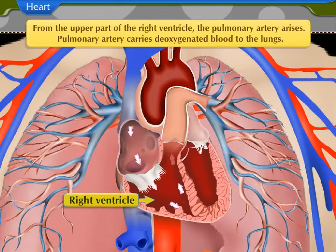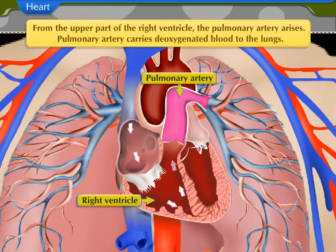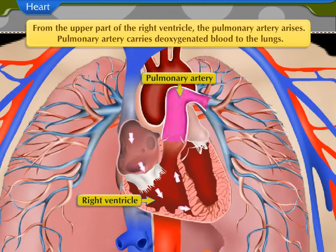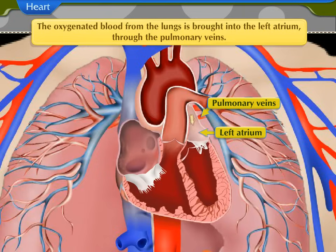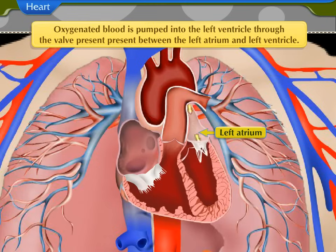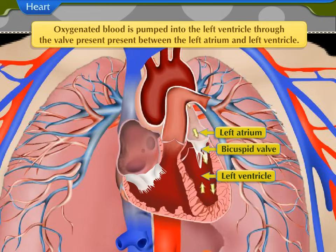From the upper part of the right ventricle, the pulmonary artery arises. This pulmonary artery carries de-oxygenated blood to the lungs. The left atrium has four openings of pulmonary veins. The oxygenated blood from the lungs is brought into the left atrium through the pulmonary veins.